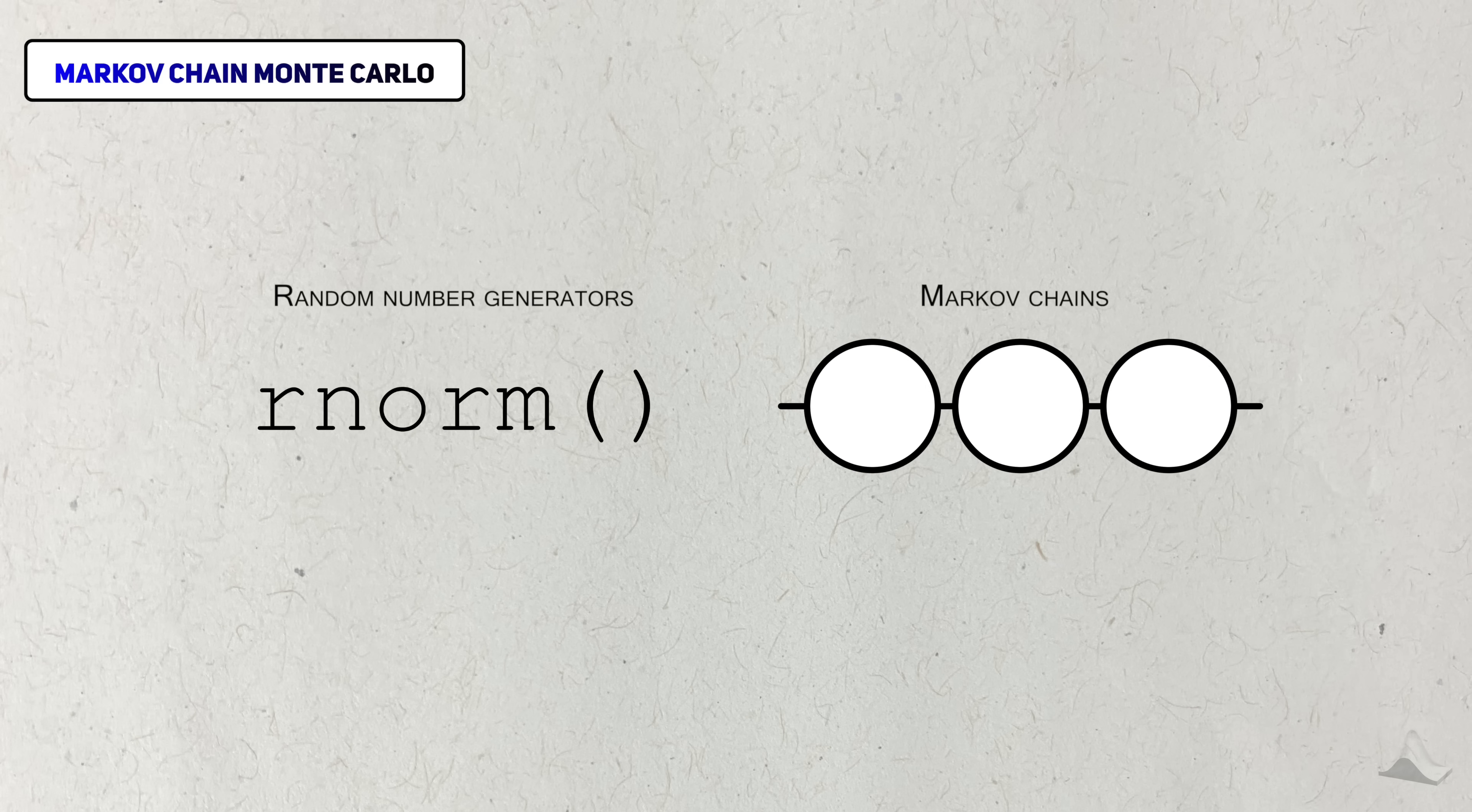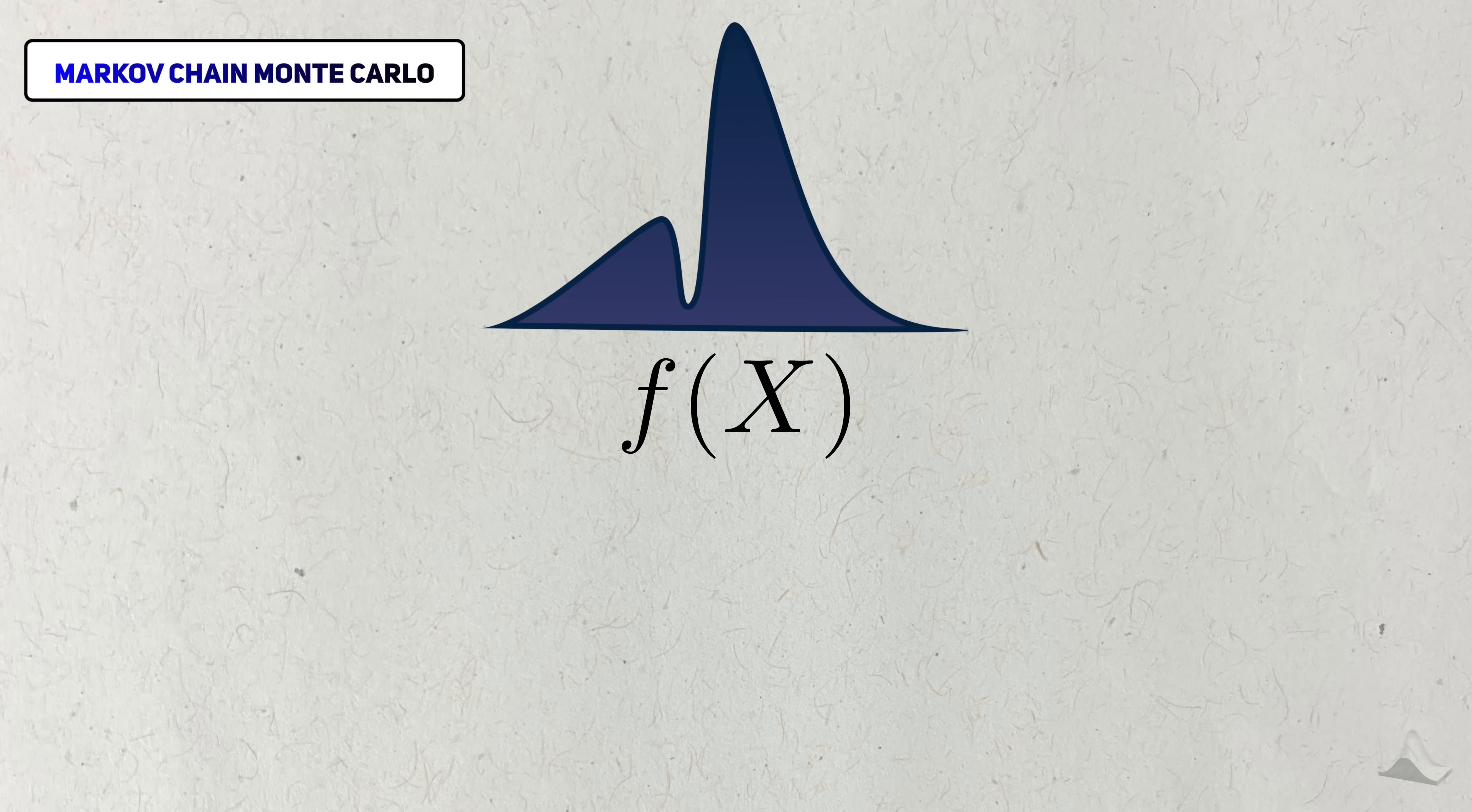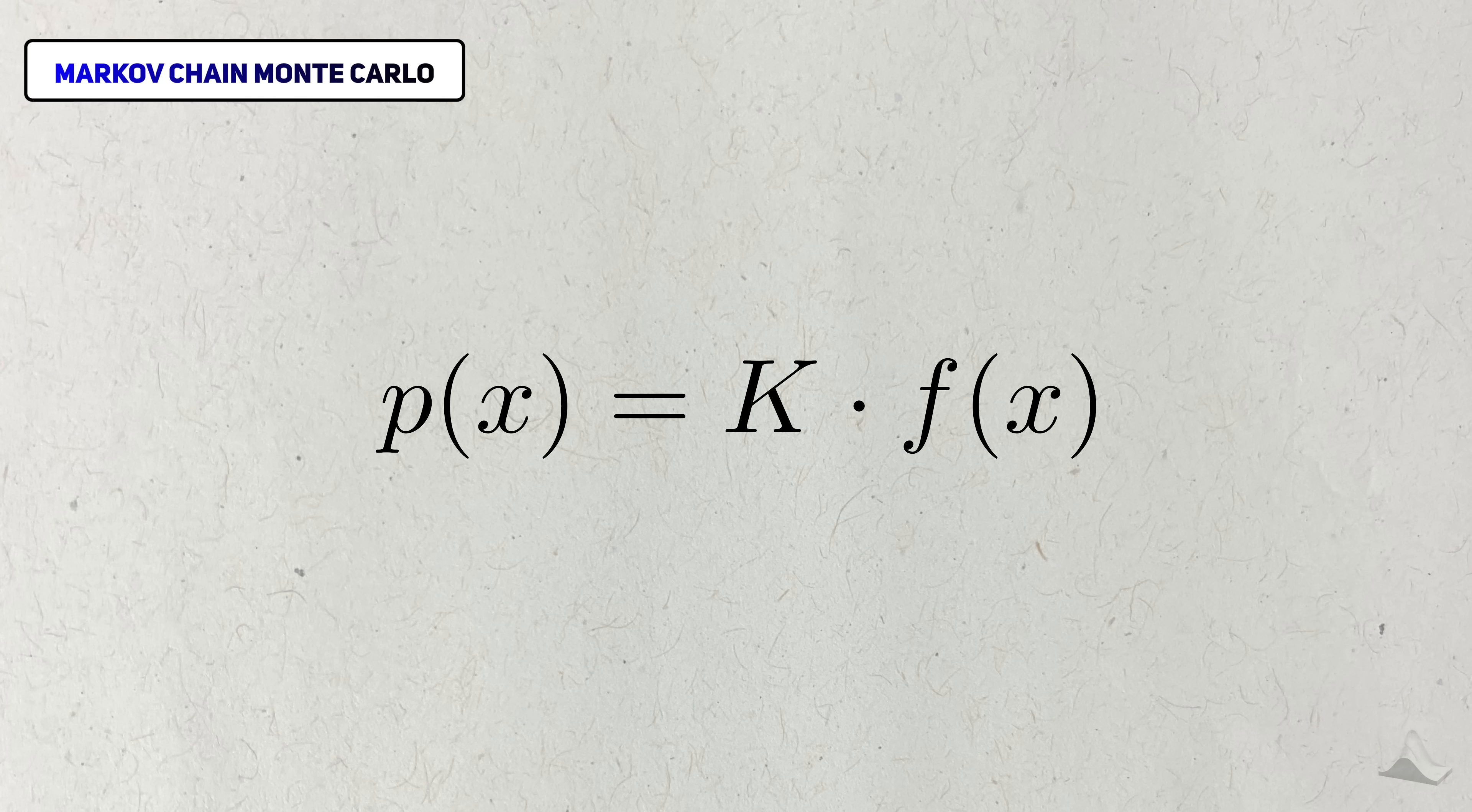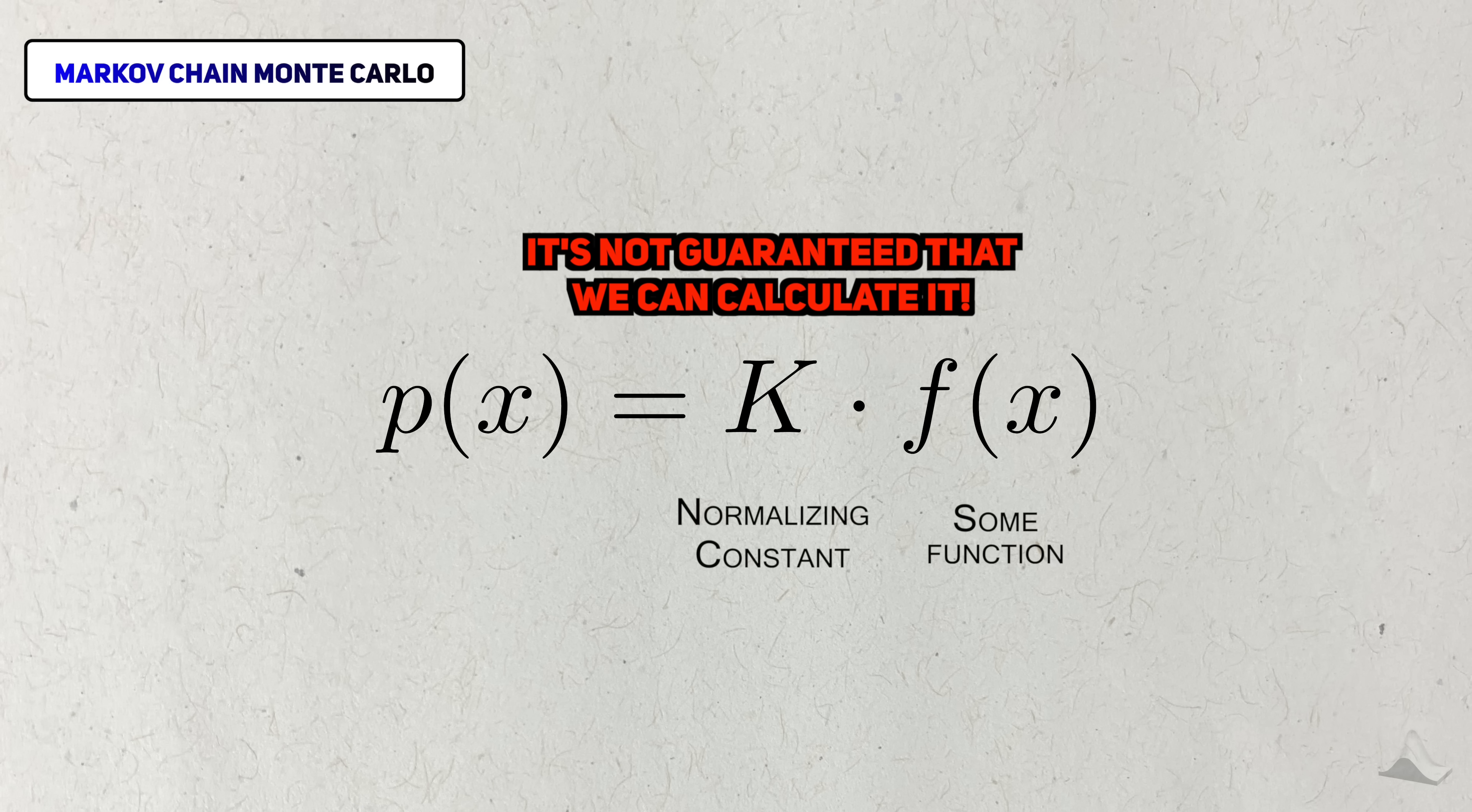Distributions like the normal or binomial distribution are nice because they have useful properties, have convenient equations, and most importantly, are easy to generate data from. But in general, that's not always the case. You can take a continuous function, f of x, and divide it by its integral. This division normalizes the area under the curve to be equal to 1, so that it's a valid probability distribution. Despite how it looks, this entire integral is just a constant, so we can rewrite the probability distribution to be the product of the normalizing constant times f of x. Even though we know it's a constant, it's not always guaranteed that we can actually calculate it.